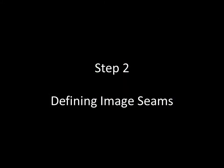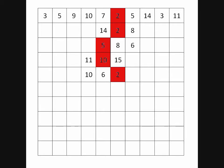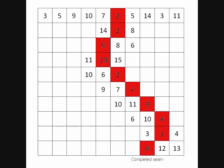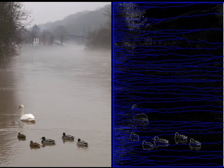Now that we have the energy map calculated, we can find seams along the image. In order to find an image seam, we find the energy values in the row and determine the minimum. From there, we look at the three values below that, determine the minimum of those, and keep stepping along until we reach the bottom of the image, completing the seam. After finding a vertical seam, we repeat the process to find all vertical seams in the image. Then the horizontal seams are found using the same method.